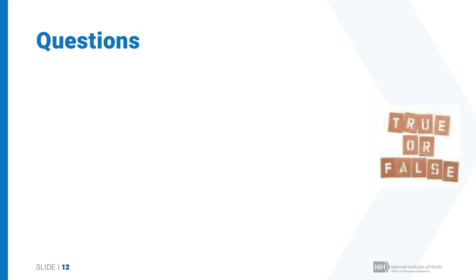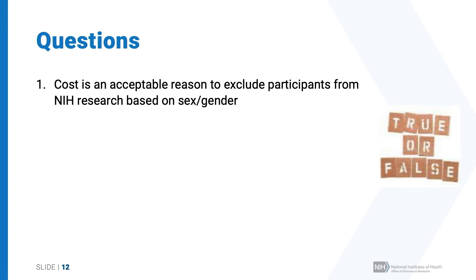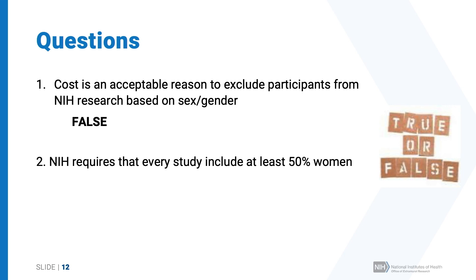True or false: cost is an acceptable reason to exclude participants from NIH research based on sex or gender? This is false. The law specifically prohibits cost as a reason for excluding participants based on sex or gender. Next question — NIH requires that every study include at least 50% women, true or false? This is false. NIH expects that the population in your study reflects the people needed to answer your scientific question. In some cases that may be 50% women, but that's not necessarily the case for every study.